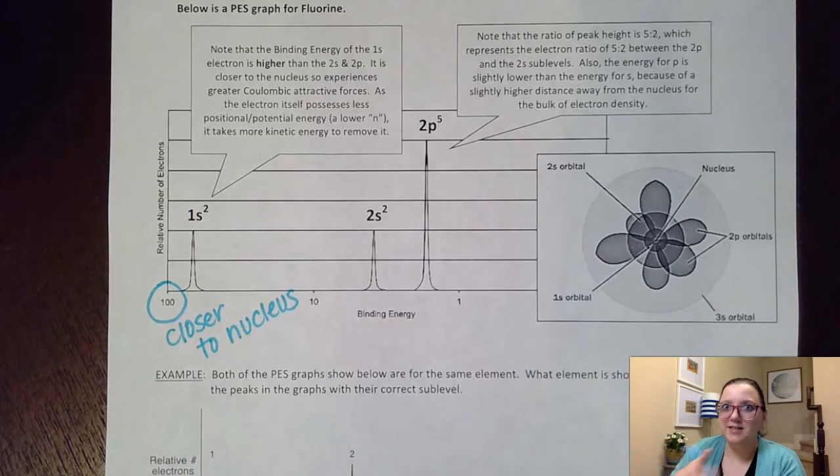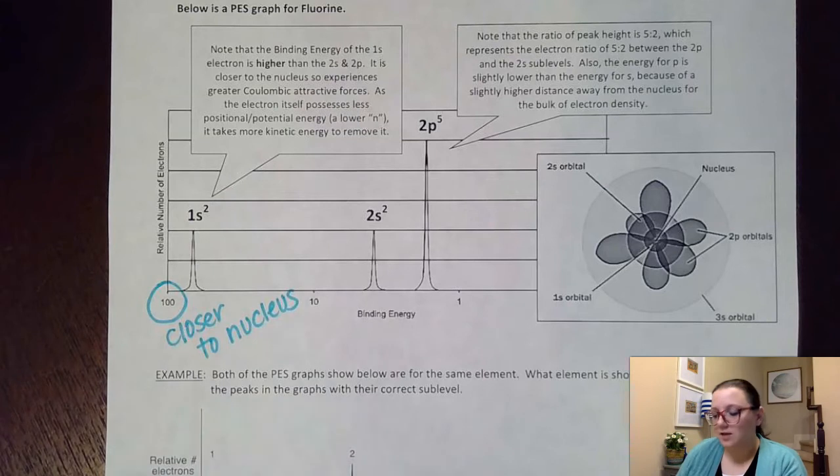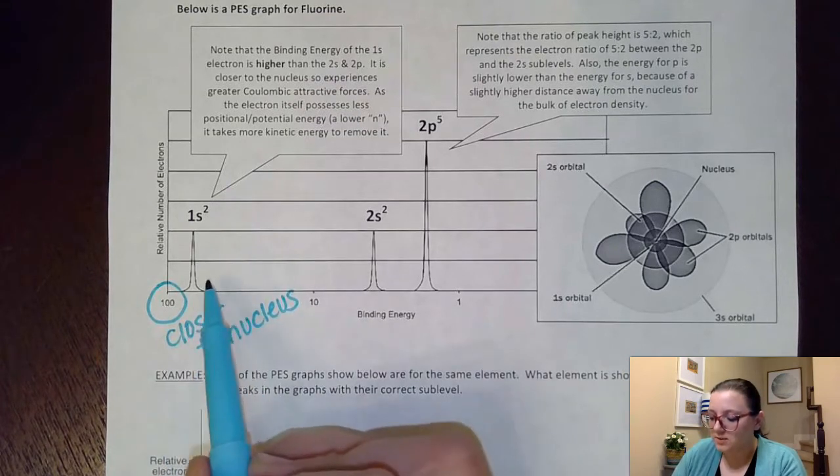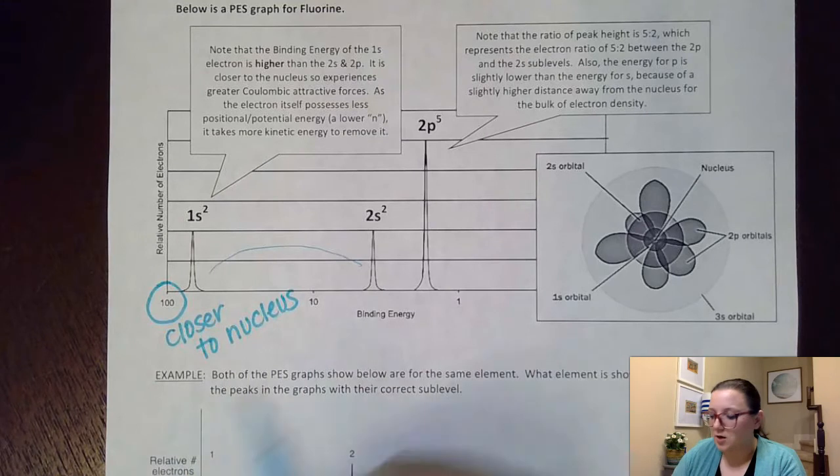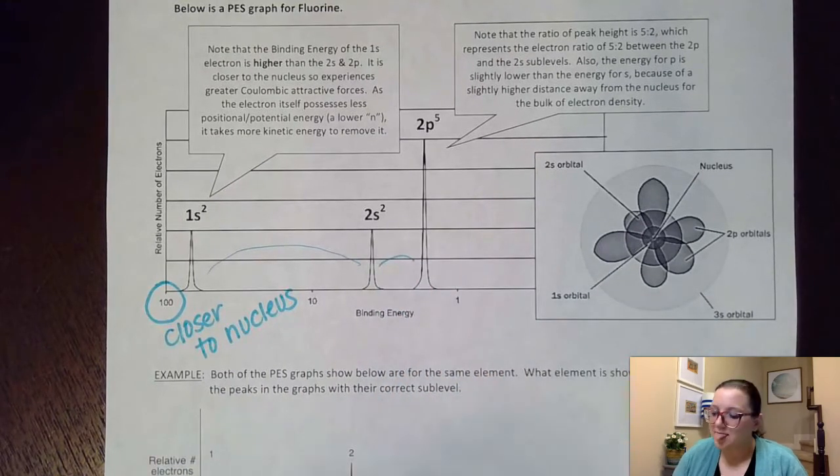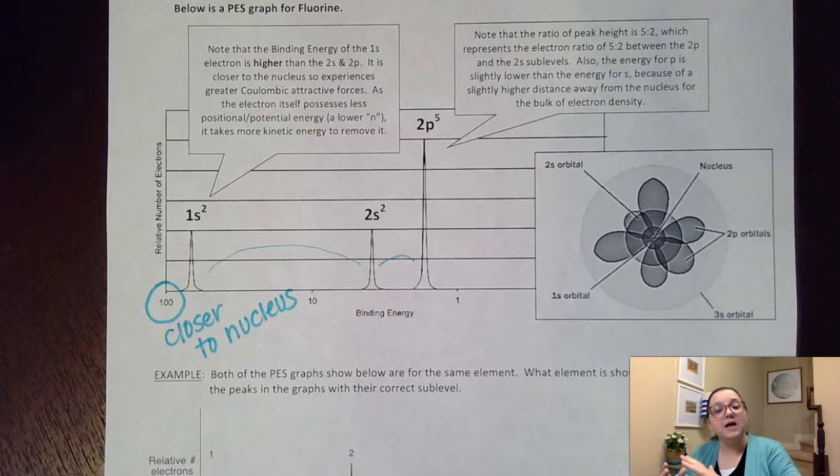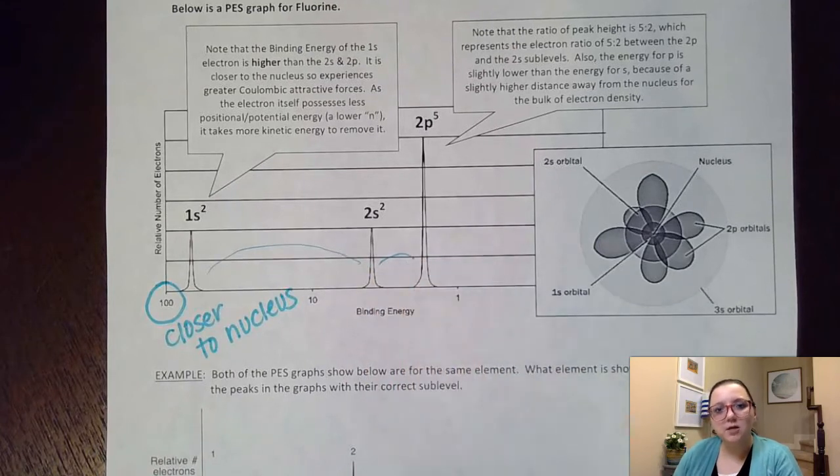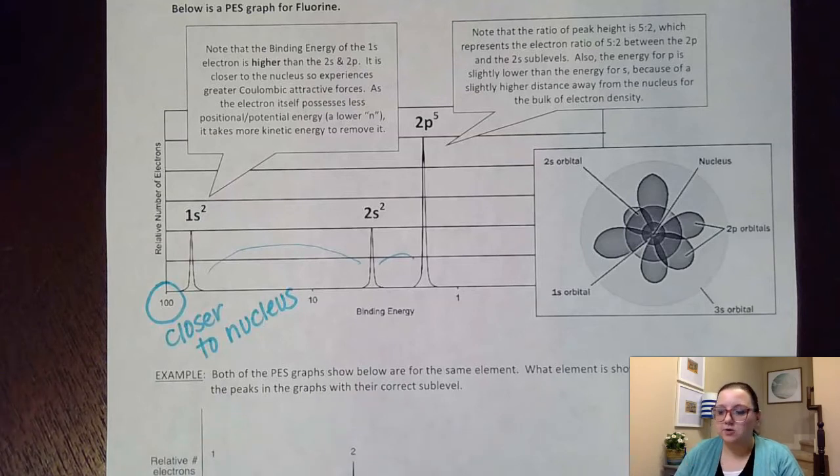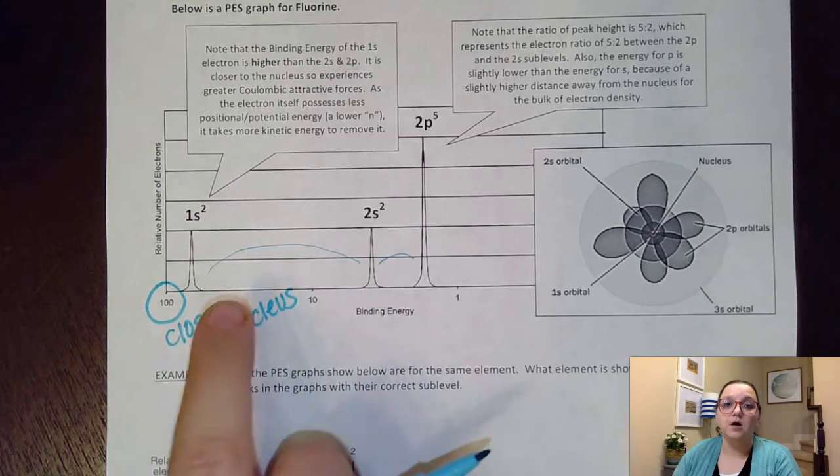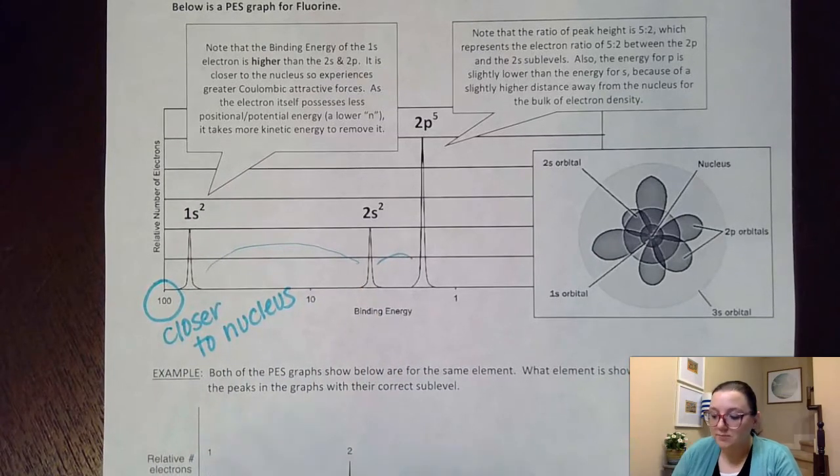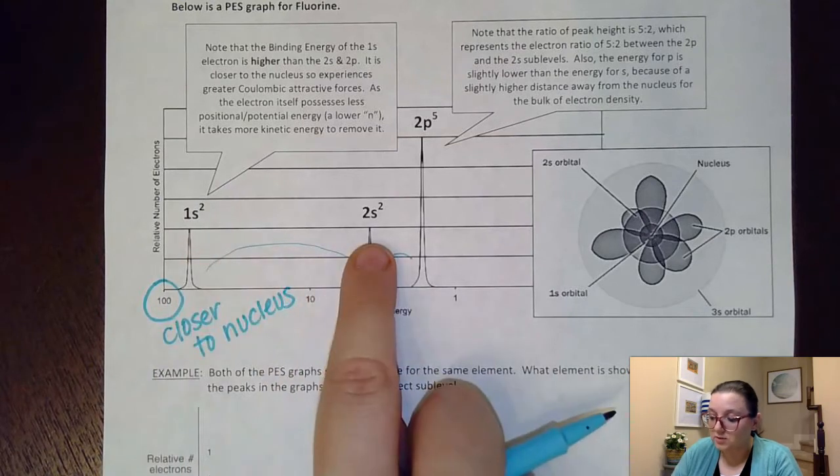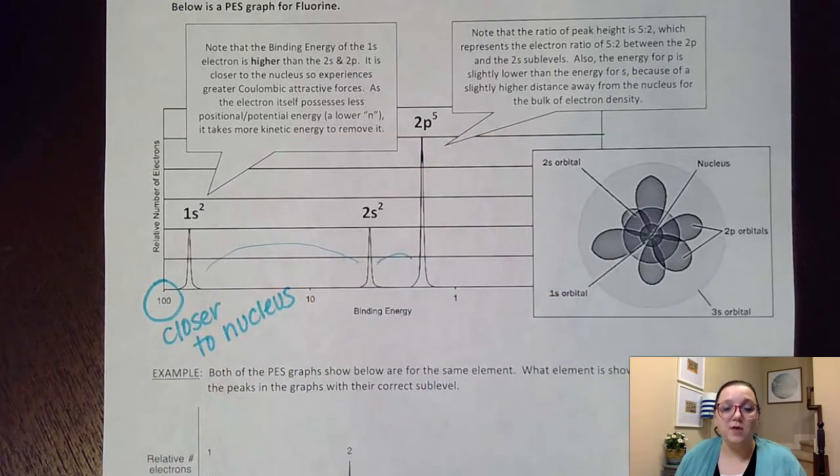So now we're starting to see that electron configuration order, right? Something else I want to point out. You notice there's a really big gap in energy here, but only a small gap in energy between these. That big gap in energy comes because I'm moving a whole entire energy level further out. Here, both of these are in the same energy level, but because they're in slightly different shaped sublevels, they're going to have a slightly different energy. But that bigger jump happens when we are jumping up occupied energy levels. So once I can see it's 1s2, 2s2, 2p5, then I can just look up what element that would be on my periodic table and figure out that it was for fluorine.